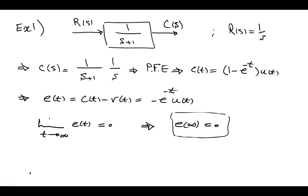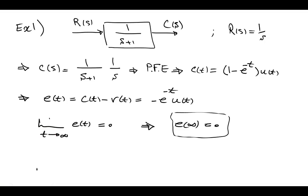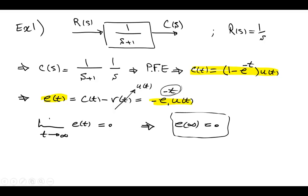Therefore, E(t) = C(t) − R(t) = −e^(−t) × U(t). Now, the limit as t goes to infinity of E(t) equals 0. So steady state error is 0. We found the relation for C(t), then E(t) was calculated. Since R(t) = U(t), once the error was found, we set t goes to infinity, and because of the exponential term, this part goes to 0 as t goes to infinity. So this error was 0.